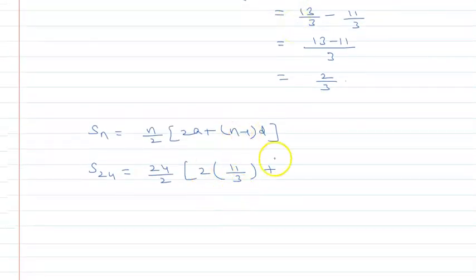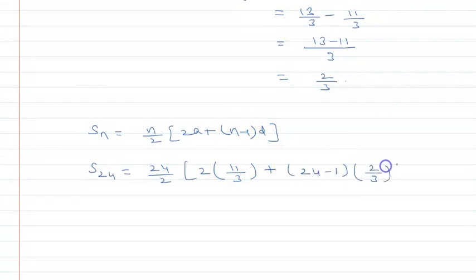= 12 × [2(11/3) + (24-1)(2/3)], where d is 2/3 common difference. This cancels to 12 × [22/3 + 23(2)/3] = 12 × [22/3 + 46/3].